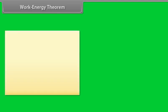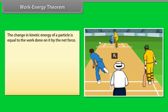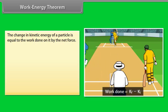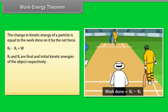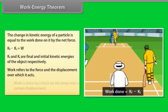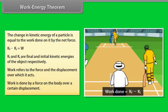Work energy theorem. The change in kinetic energy of a particle is equal to the work done on it by the net force. Kf minus ki equals w. Here kf and ki are final and initial kinetic energies of the object respectively. Work refers to the force and the displacement over which it acts. Work is done by a force on the body over a certain displacement.